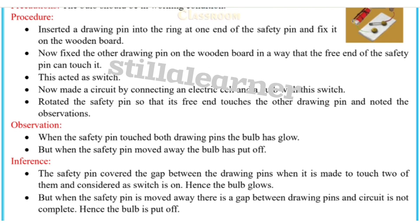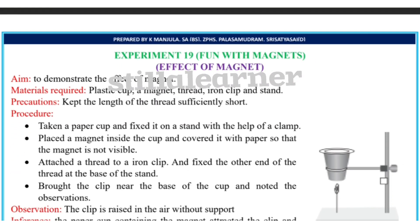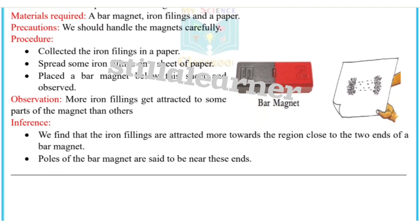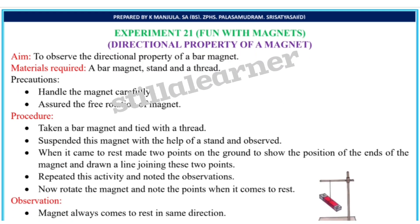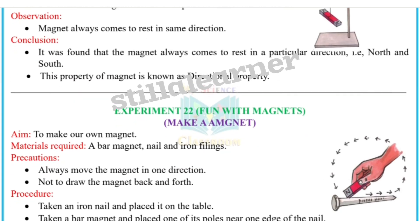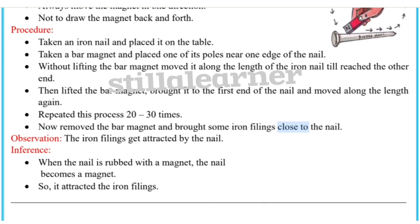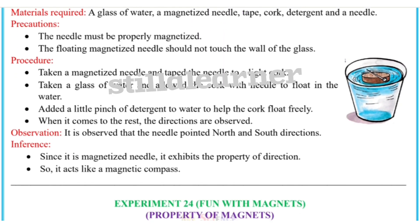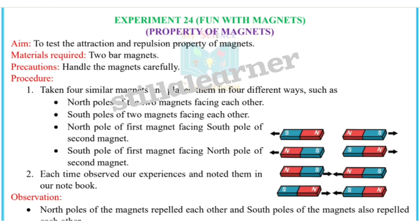Experiment 19 is fun with magnets — effects of magnets. Experiment 20 is fun with magnets — poles of a bar magnet. Experiment 21 is the directional property of a magnet. Experiment 22 is making a magnet. Experiment 23 is fun with magnets — magnetic compass, done with water. Experiment 24 is properties of magnets.